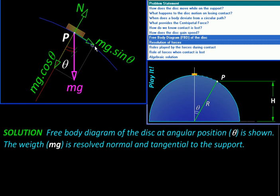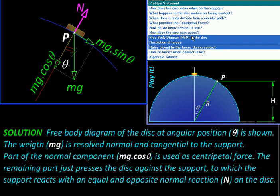Now part of this cos theta component will be providing the centripetal force and the remaining will be used for balancing this normal reaction. So that is the role played by this mg cos theta. Partly it is centripetal force and partly it is just keeping the disc pressed against the hemisphere.